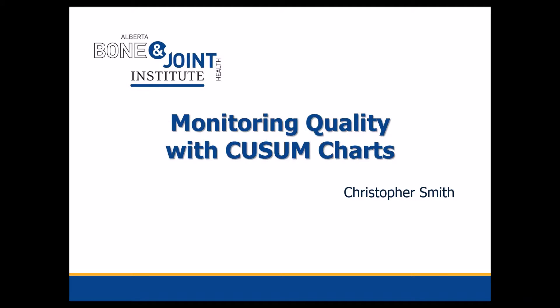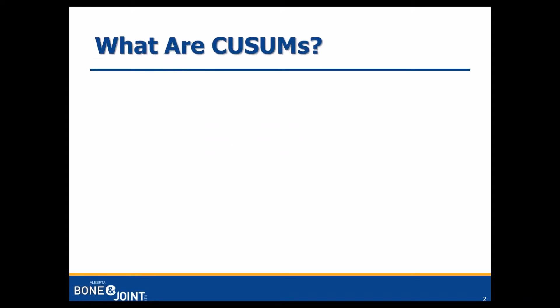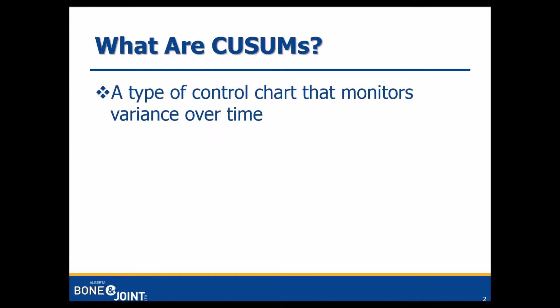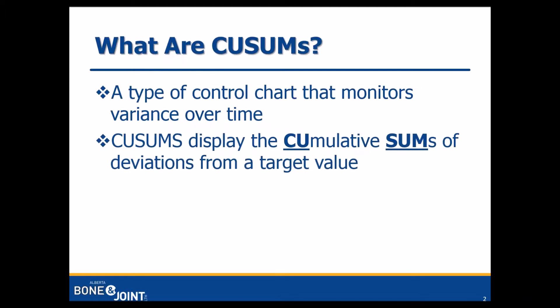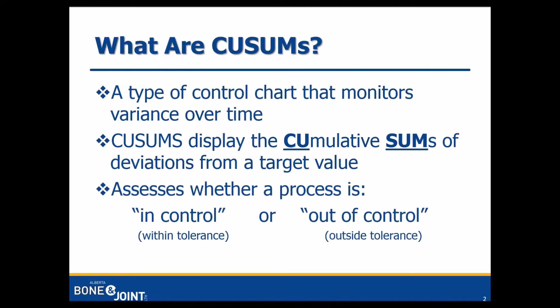Welcome to this video on monitoring quality with QSUM charts. QSUMs are a type of control chart that monitor variance in a process over time. They report the cumulative sum of deviations from a target value, hence the name QSUMs. QSUMs can be used to assess whether a process is in control or within tolerances, or out of control or beyond tolerances.